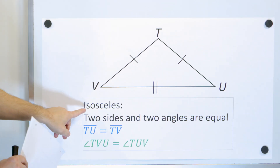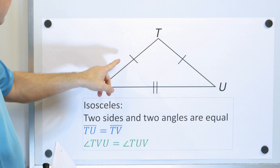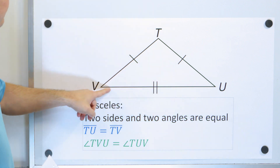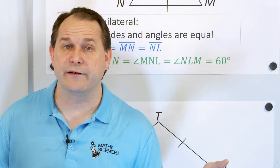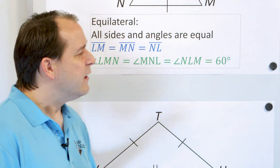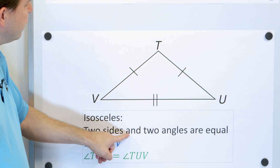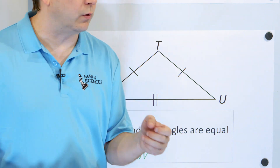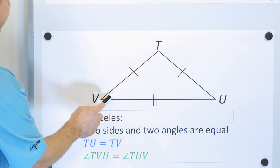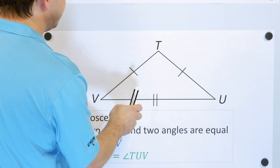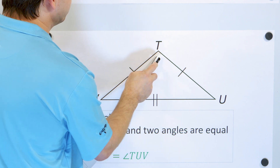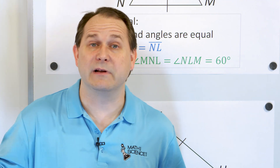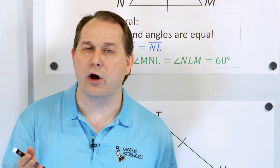Now we have another kind of triangle called an isosceles triangle. Isosceles means you have two sides that are congruent — the same length — but the third side of the triangle is not the same length as the other two. So equilateral has all three equal; isosceles just means two sides are equal or congruent, and because of that, two angles inside of the triangle are equal.